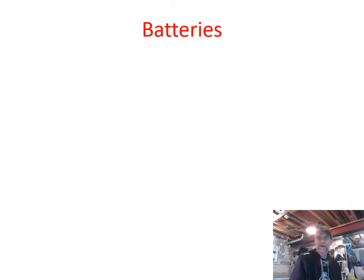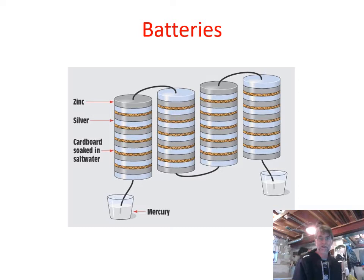Volta's original battery consisted of stacking zinc and silver discs with a layer of saltwater-soaked cardboard in between. We take a whole bunch of zinc and silver plates separated by cardboard soaked in salt water. Chemical reactions take place through the interaction of these two dissimilar metals, and we end up recognizing a potential as a result of stacking all these cells together.